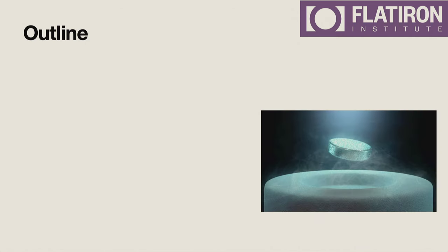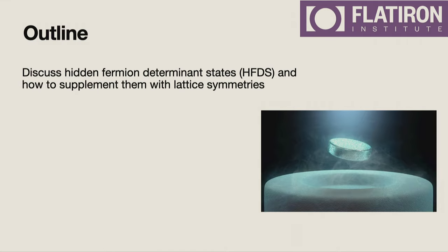I'm going to be showing calculations from variational Monte Carlo. There's been several really nice introductions to it already, so I'm going to skip that part. But I do want to talk a little bit about my wave function ansatz, which are these hidden fermion determinant states. And I'm going to add some lattice symmetries to these states.